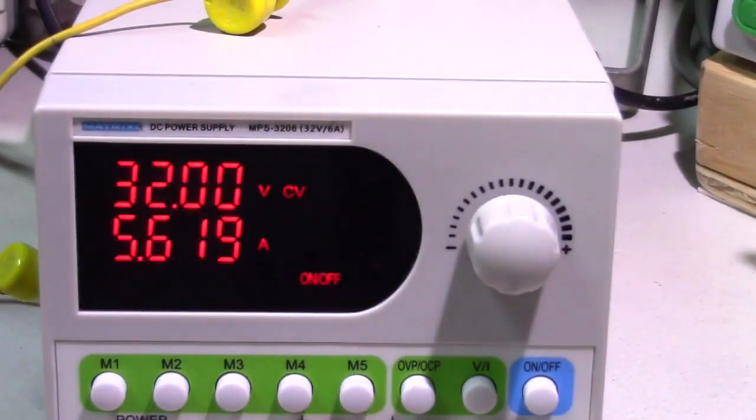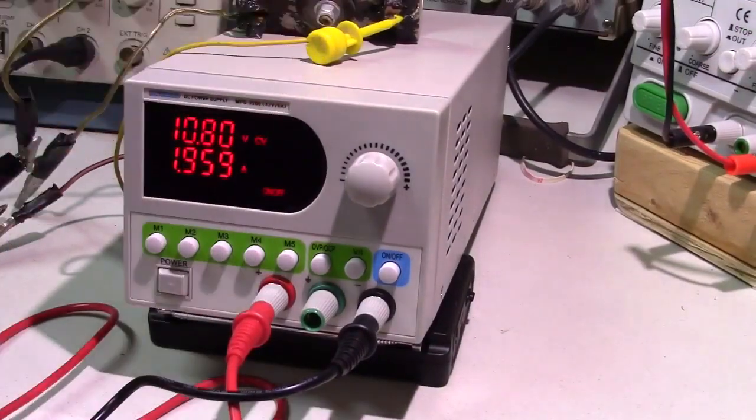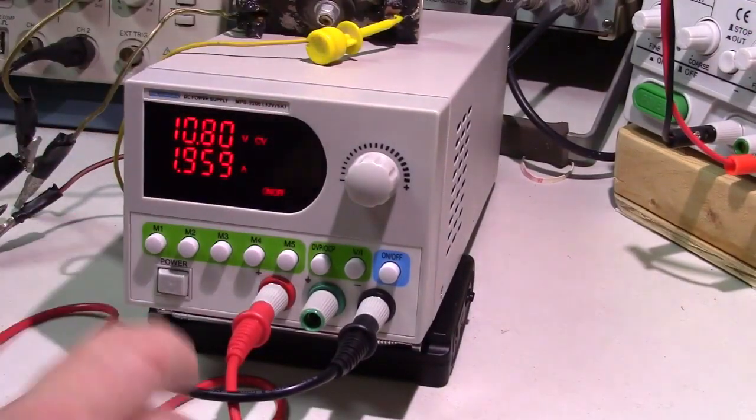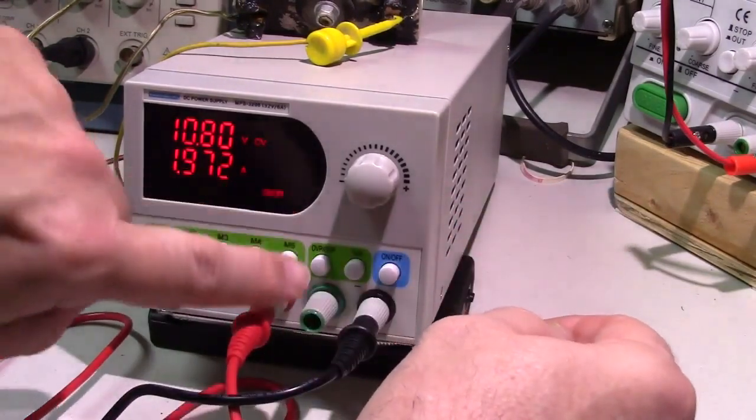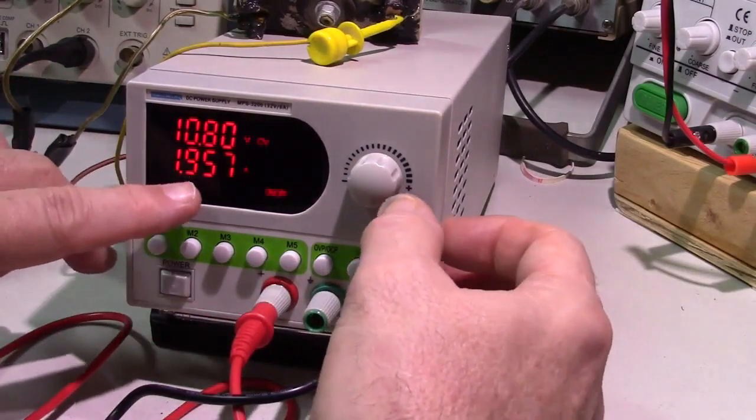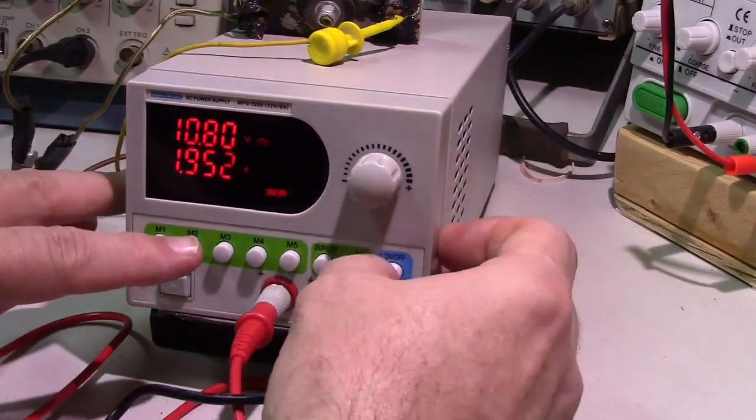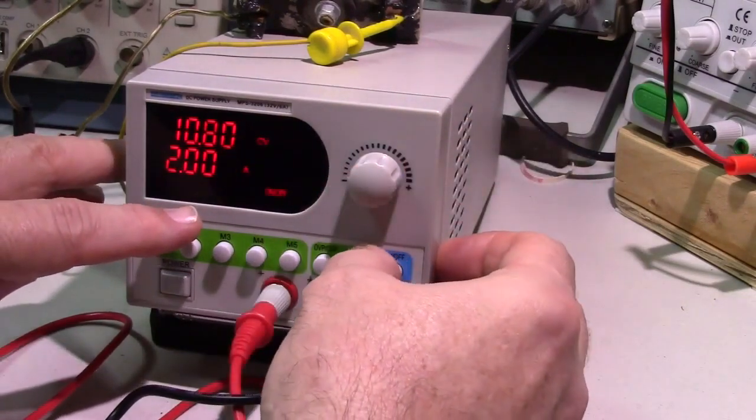Here I still have the load on, and I have the constant current constant voltage switch pushed. I want the current to stay at 2 amps. If I go to current, it's set at 2 amps right there.